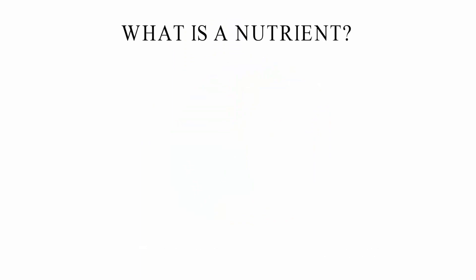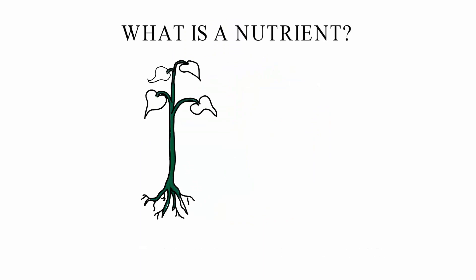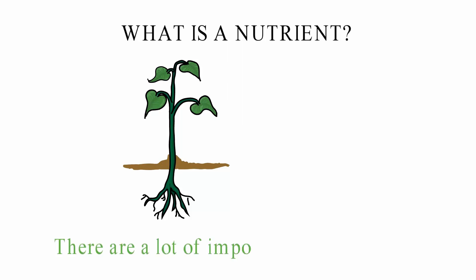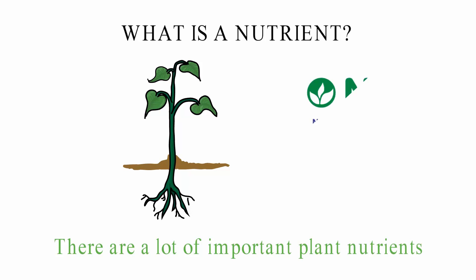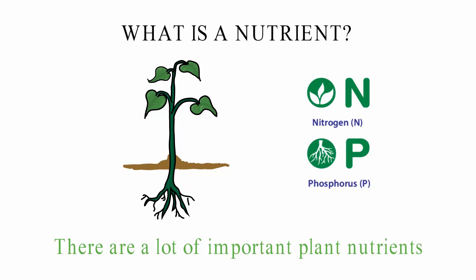What is a nutrient? A nutrient is any chemical substance that helps living things grow and get food. A plant or animal must get enough nutrients to stay alive and be well. There are a lot of important plant nutrients, but nitrogen (N) and phosphorus (P) are the two that are most important.